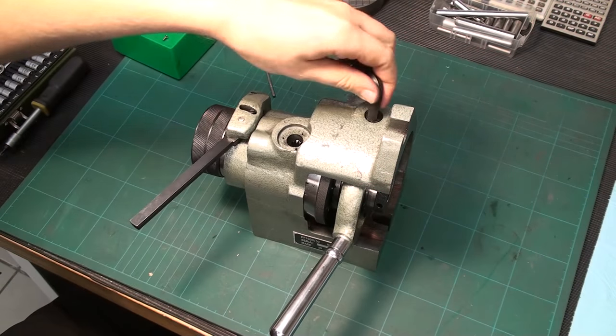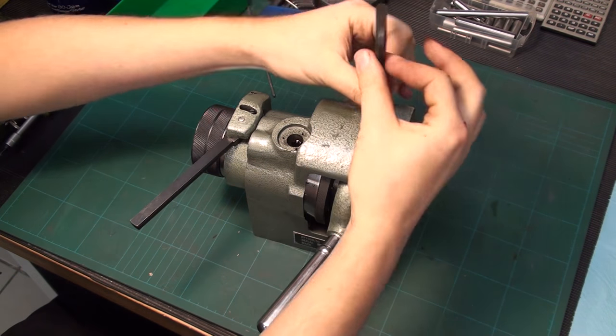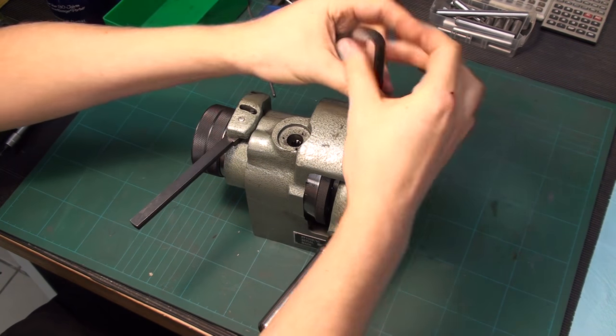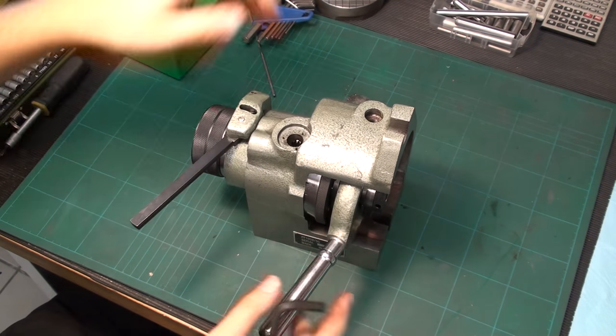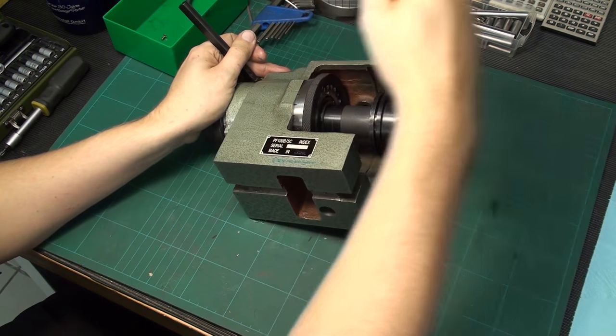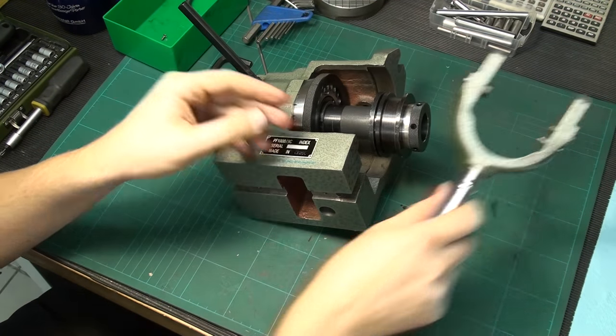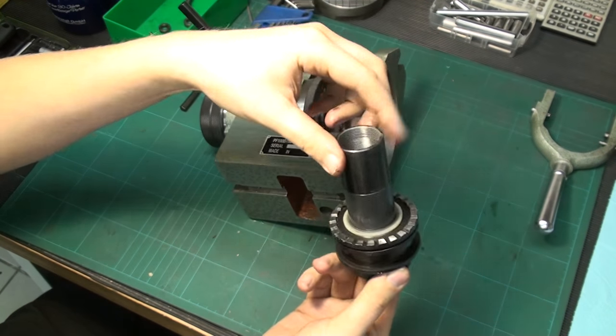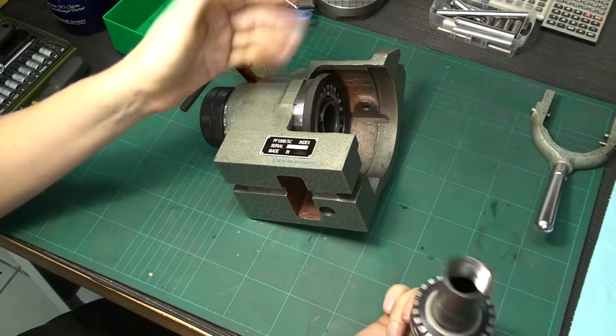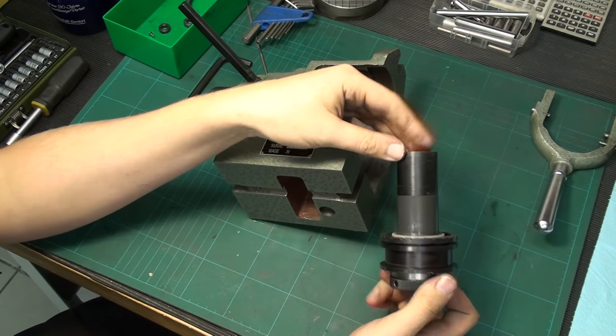Now it might be a good idea to pull out the quick action lever here for the collet, for the draw tube. It's hinged on two stepped bolts. We can remove the lever and pull out the draw tube. I already had this guy completely apart and I cleaned everything. And I decided to do a short video on this thing.